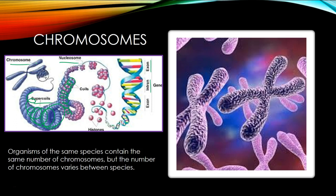The number of chromosomes between species differs, but the number of chromosomes should be the same within a particular species. In humans' case, the number of chromosomes is 46, but the number for a dog, a fruit fly, a chicken, or a fish would be different. 46 chromosomes makes us us, and the number of chromosomes in a dog makes a dog a dog.